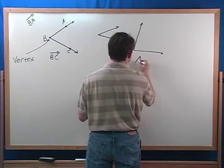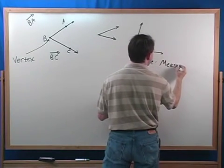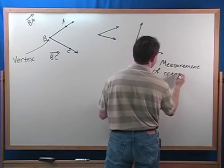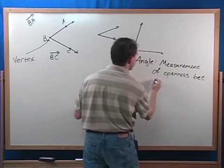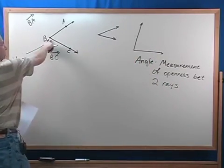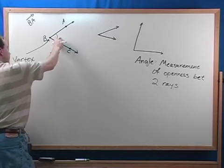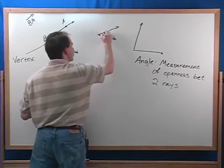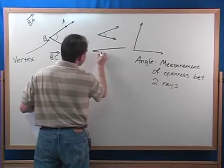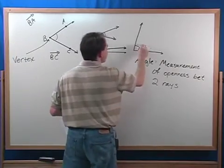An angle is the measurement of openness between two rays. That's the best word I could come up with — openness. The vertex is at the point. This angle right here, we put a little arc in here, and that means there's an angle here. So this angle is bigger than this angle, because this one is almost shut. I could draw one that was really tiny — the openness is very small. So this angle is bigger than this one, and this angle here is bigger than all the rest.